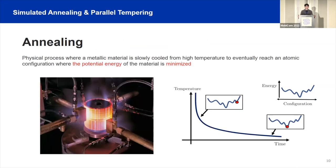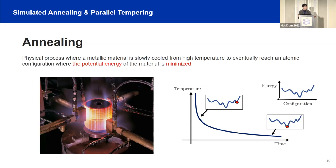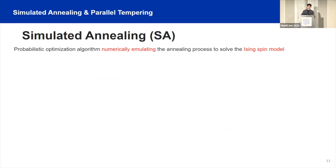Before discussing simulated annealing, let me briefly introduce the annealing process itself. Annealing is a physical process where we initially heat up a metallic material. The heat causes disorder in the atomic configuration, making the material easier to reshape. As time goes by, the temperature decreases and the atomic configuration becomes more and more stable. At the end, the atomic configuration reaches a state where the potential energy of the material is minimized. This energy landscape is similar to what we saw for the Ising spin model. Simulated annealing is an optimization algorithm that numerically emulates this process to solve the Ising spin model.